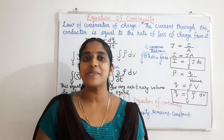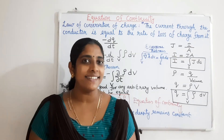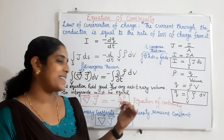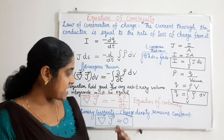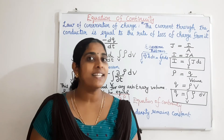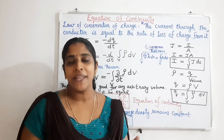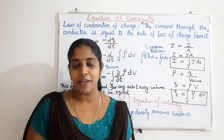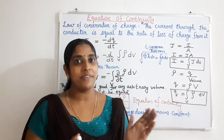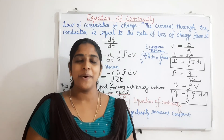We have seen the divergence theorem and Stokes theorem, which give the relationship between volume integral, surface integral, and line integral. With the help of the divergence theorem, we derived the equation of continuity as del · J = −∂ρ/∂t, and for stationary currents we got del · J = 0. In the next video, we will see Maxwell's equations, where we use the same concept: state a law, write it in mathematical form, express it as integrals, then apply Stokes theorem or divergence theorem to reach Maxwell's equations.